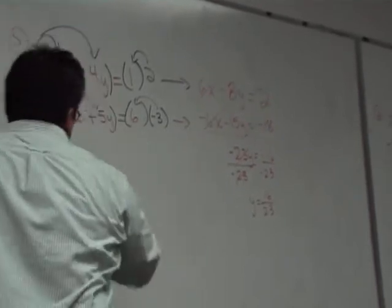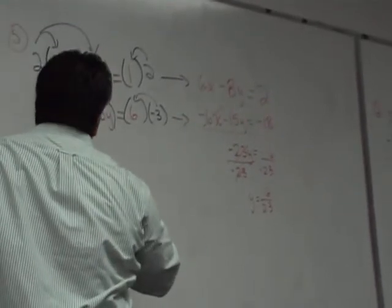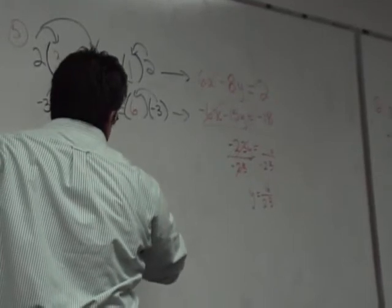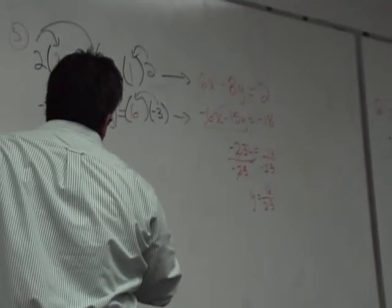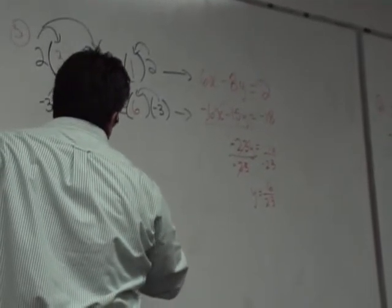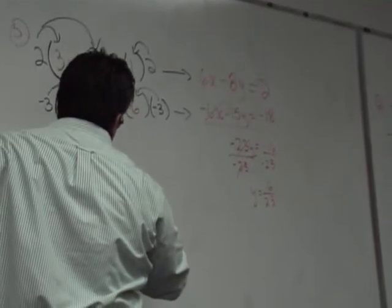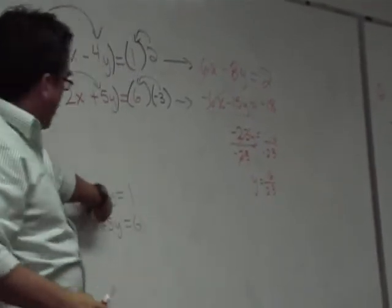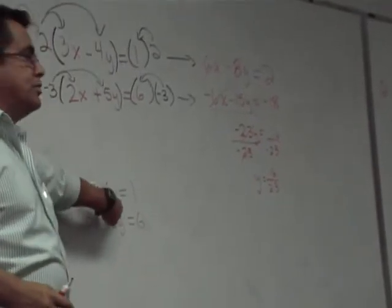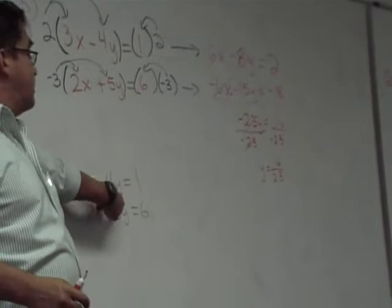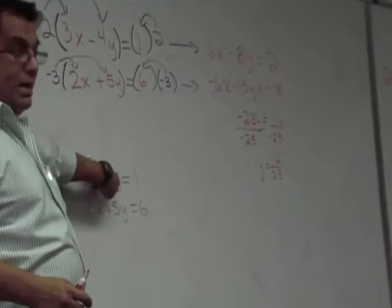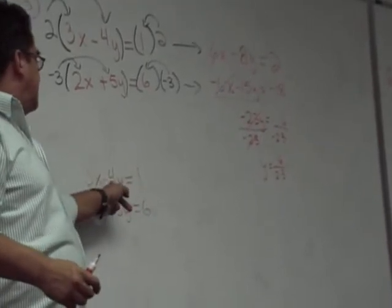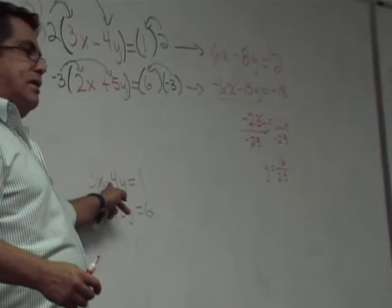Ask yourself: why do I multiply? What do both of these numbers go into? What can I change them into? They both can go into 20. Does that make sense? If I change this into a negative 20 and this into a positive 20, they would cancel out.